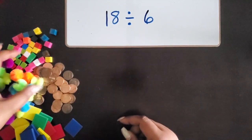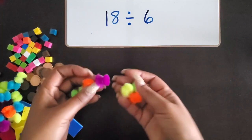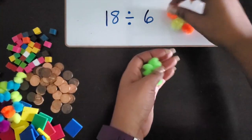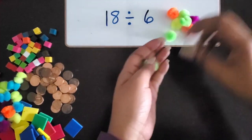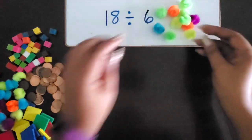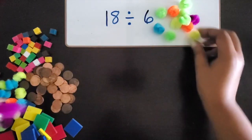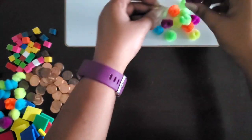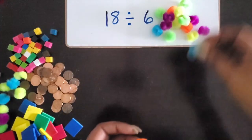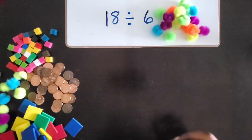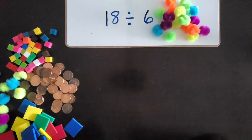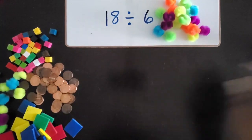So if I have 18, I'm going to take 18 of these pom-poms: 1, 2, 3, 4, 5, 6, 7, 8, 9, 10, 11, 12, 13, 14, 15, 16, 17, 18. So we have 18 pom-poms and we're going to divide them or share them into six groups.